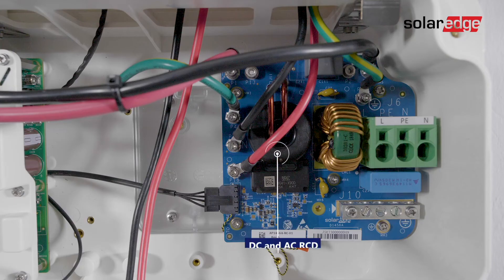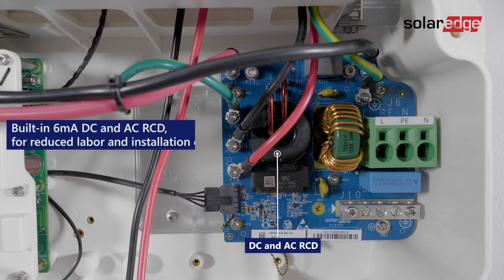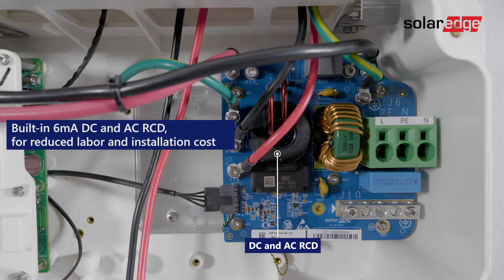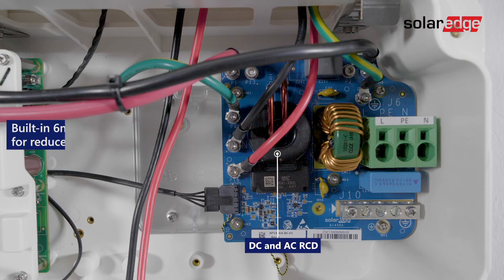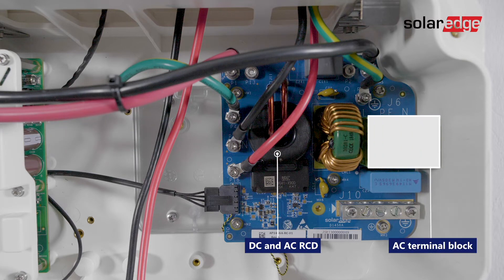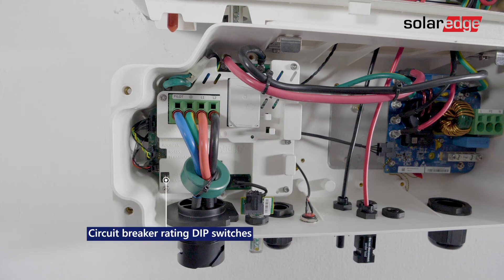Here is the DC and AC RCD, the AC terminal block, and last, the circuit breaker dip switches.